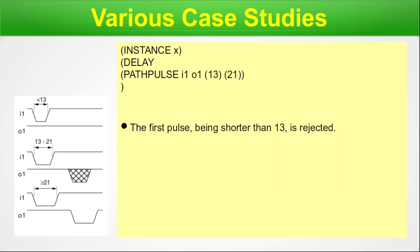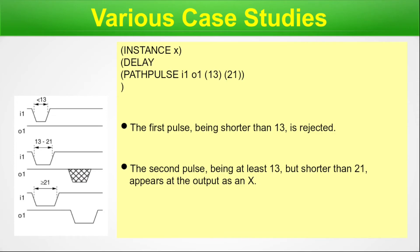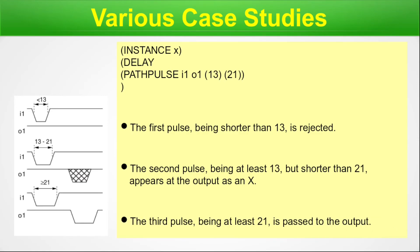Case one: a pulse shorter than 13 is rejected. Case two: a pulse at least 13 but shorter than 21 appears at the output as X (unknown state). Case three: a pulse of at least 21 is passed to the output. This is how the pulse rejection limit and e-limit define the transmission of a pulse from an input port to an output port.